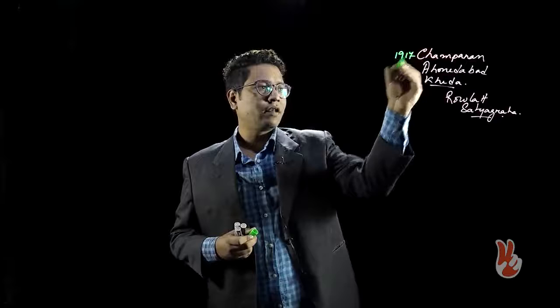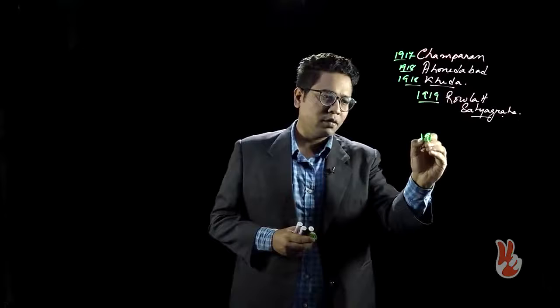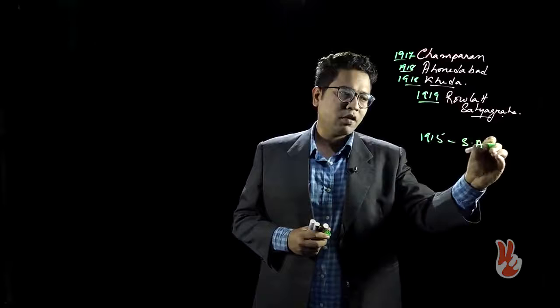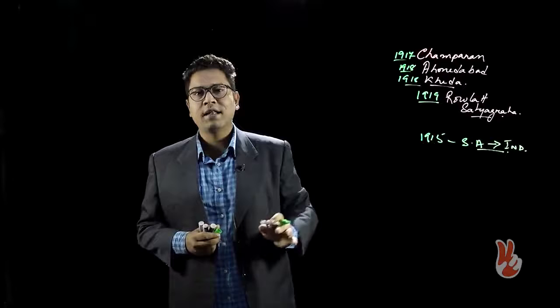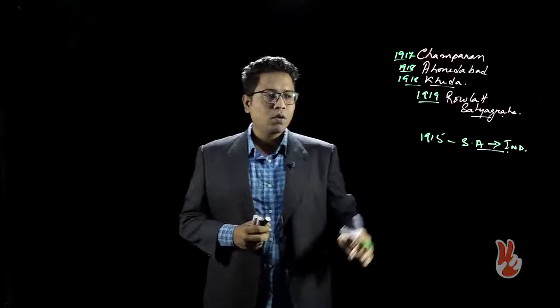The key dates to remember: Champaran 1917, Ahmedabad 1918, Khera 1918, and Rowlatt Satyagraha 1919. However, even before these dates, one important date is 1915 — the year Gandhi returns from South Africa to India. From 1915 itself he begins his constructive work and forming alliances with political parties who would submit to his ideas of Satyagraha, passive resistance, and non-cooperation.